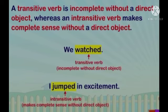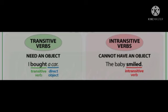Example: we watched. Here, watched is transitive verb. Next, I jumped in excitement. Here, jumped is intransitive verb. Let's take some more examples. I bought a car. Here, bought is a transitive verb, and car is a direct object. And in intransitive verb, the baby smiled. Here, smiled is an intransitive verb. Aur, isa kisi object ke zhurt nahi.